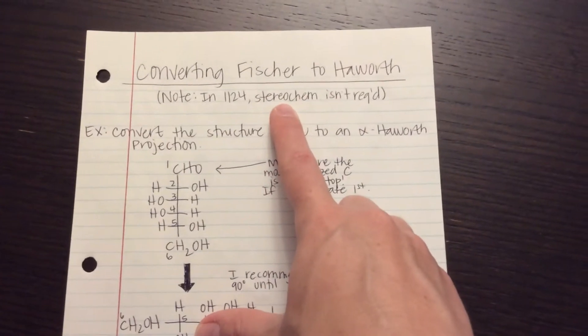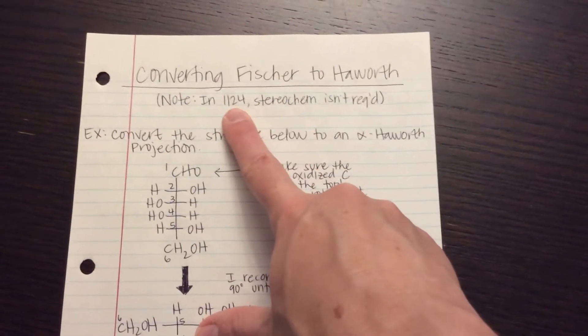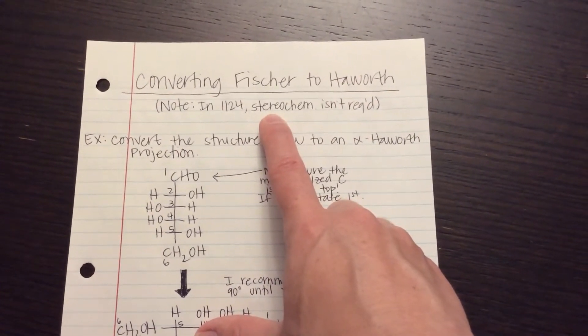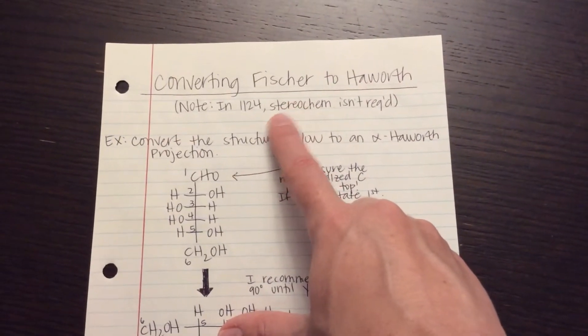We don't do stereochemistry in our Haworth and Fischer projections. That's not something that we worry about in elementary organic chemistry. But in organic 2, which is Chem 21-22, you will worry about stereochemistry, but not in elementary organic.